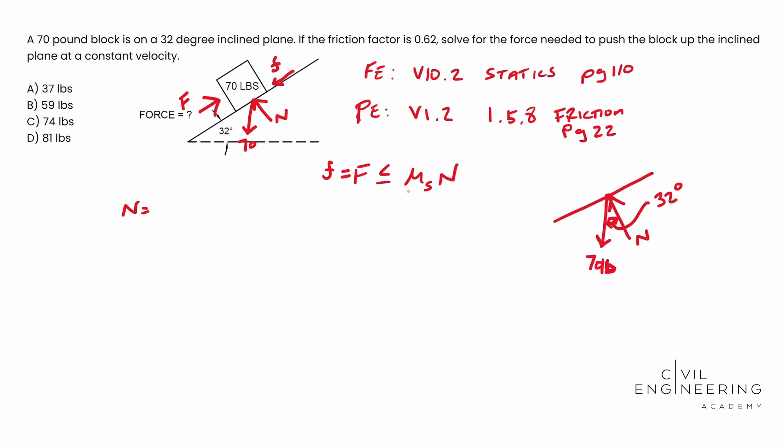What we can do to solve for the normal force is essentially do the W, which is 70 pounds, and multiply that by the cosine. Remember your SOHCAHTOA. Our normal force is going to be W times cosine, so 70 pounds times the cosine of 32 degrees. When you do that, you end up with a normal force of 59.3634 pounds, which makes sense.